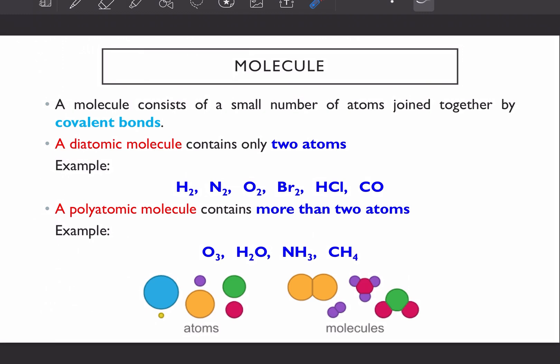What is a molecule? I think you know what a molecule is. It is basically non-metal plus non-metal. So basically a molecule consists of small number of atoms joined together by covalent bonds. And you can have diatomic molecule, that means you have two atoms like these. Or you can also have polyatomic molecule. Poly means more than two.